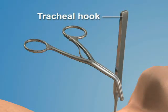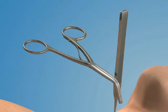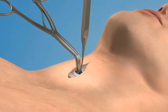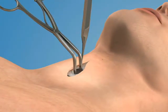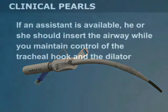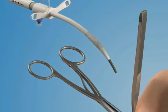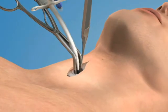While holding the hook with your non-dominant hand, use your dominant hand to place the trousseau dilator into the trachea. Spread the blades open to dilate the opening in a vertical direction. You are now ready to insert the airway into the trachea. If an assistant is available, he or she should insert the airway while you maintain control of the tracheal hook and the dilator.